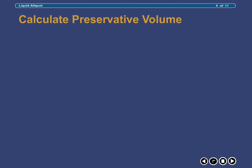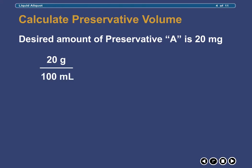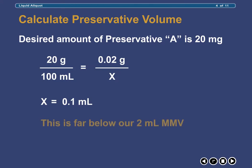In this example, the amount of Preservative A that we wish to obtain is 20 milligrams. Setting up a simple proportion, we can calculate that the volume of 20% Preservative A solution needed to provide this amount is 0.1 milliliters. And this is far below the minimum measurable volume of the glassware that we have available.